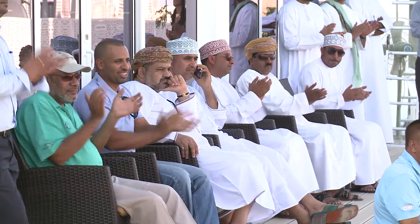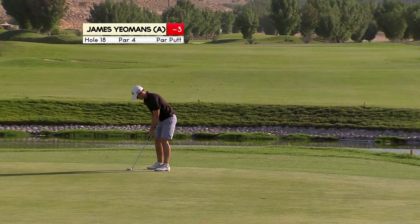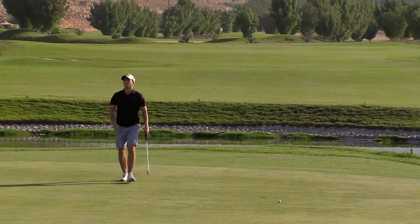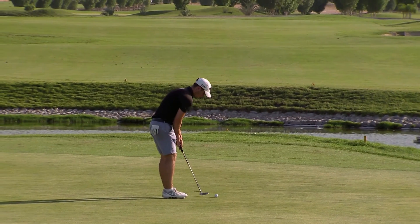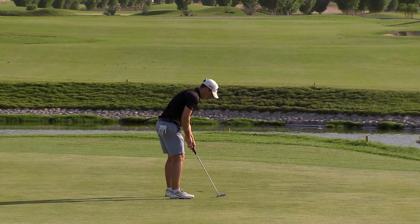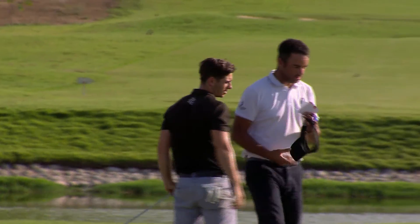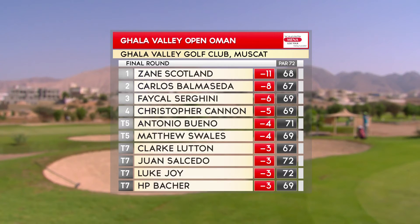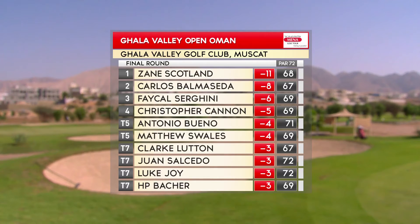A final round of 68 for Zane Scotland — Mr. Consistent this week — 11 under par. James Yeomans tries to finish things off but the ball just slips past the hole for a bogey on the final hole. He finishes with a final round of 73, two under par, leaving him as joint leading amateur with Daniel Kay. Zane Scotland — rounds of 68, 69 and 68 — back in the winner's circle and up to second in the order of merit behind Luke Joy. An excellent performance and it's good to see Scotland back to his best.